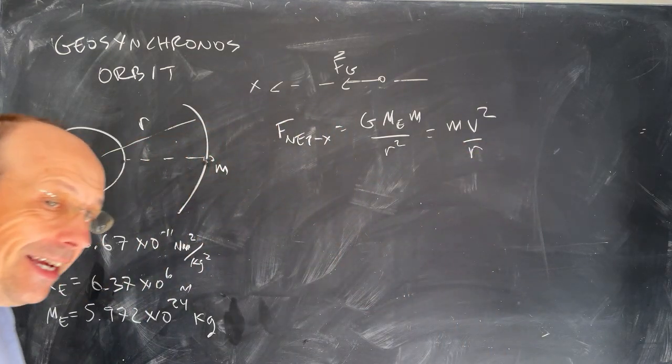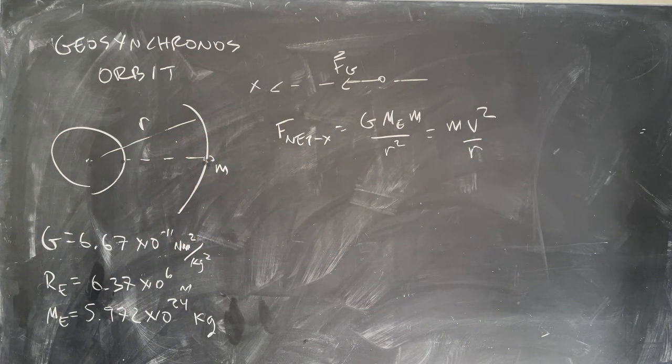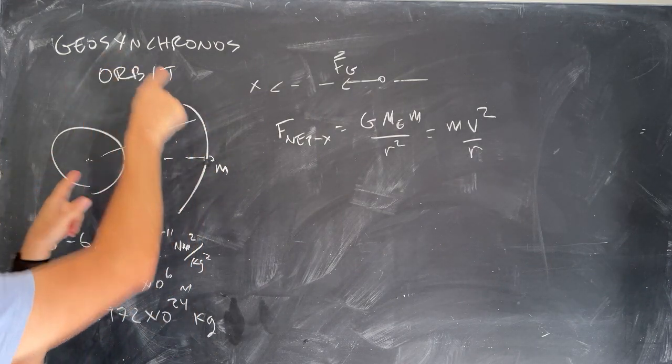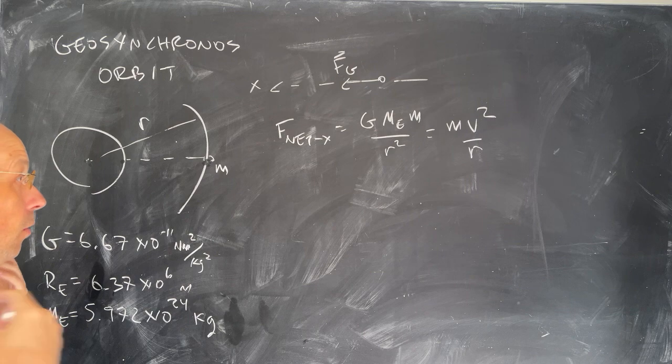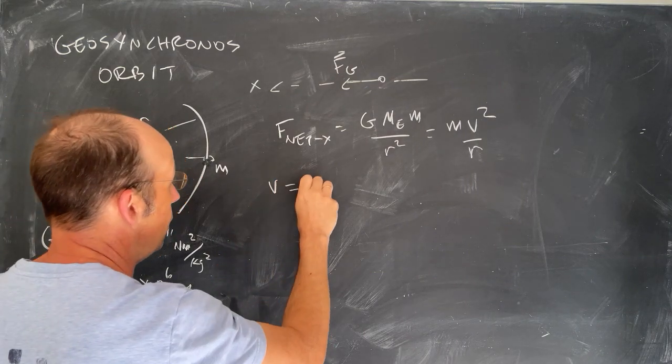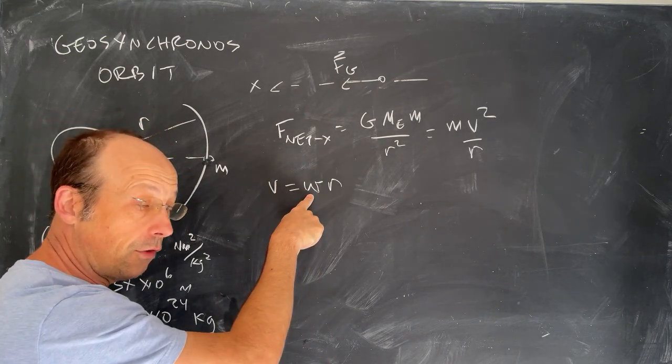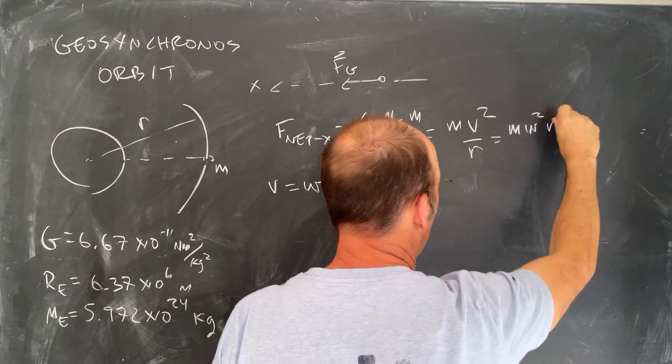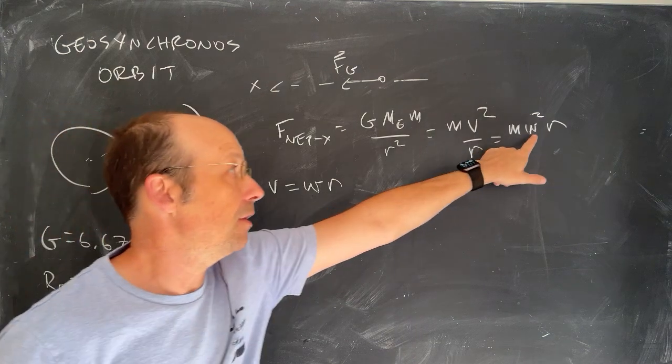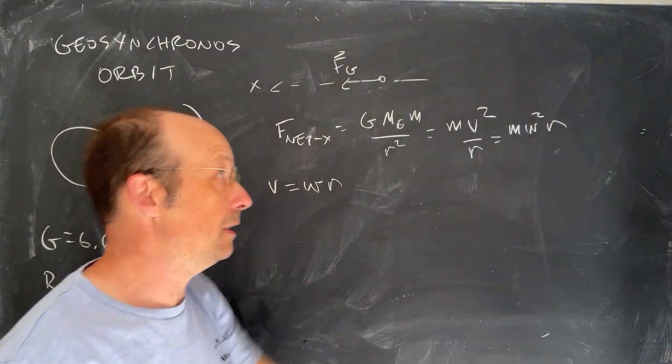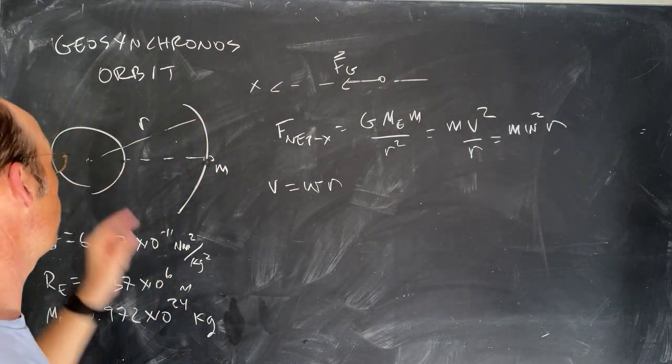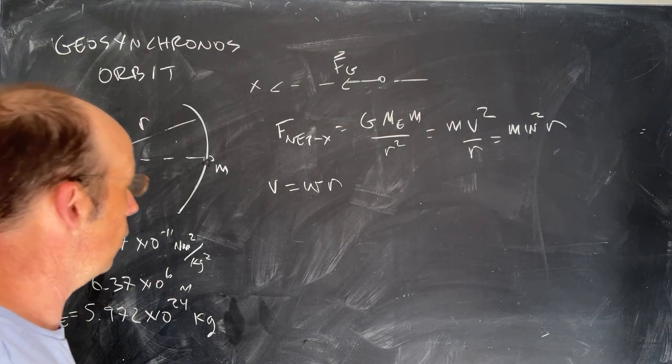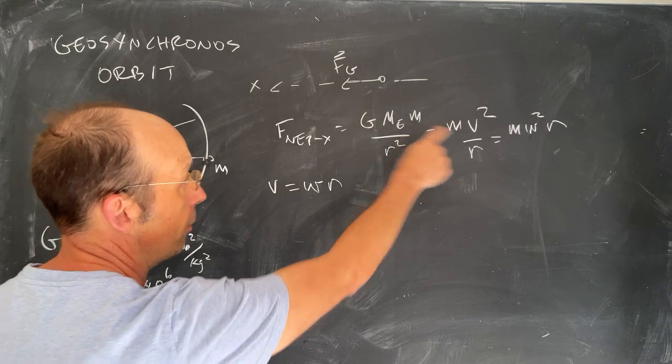But in this case, I don't really care about the velocity, right? I don't care what the velocity of this is. I care about its rotation rate, because I want them to rotate the same. So since v equals omega times r, this is the angular velocity. I can substitute this in, and I get m omega squared times r, and that's a little bit easier. So this is the angular velocity of the satellite as it orbits, and I want that to be equal to the angular velocity of the earth. So let's just start with that. I've put that up here.